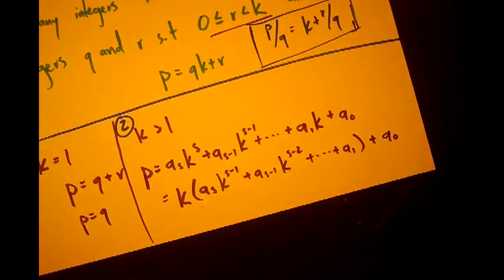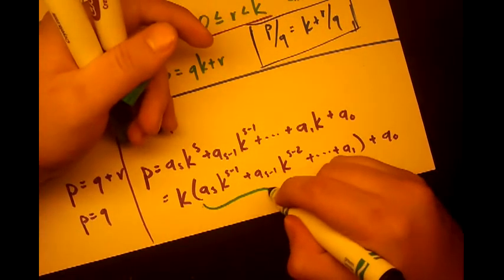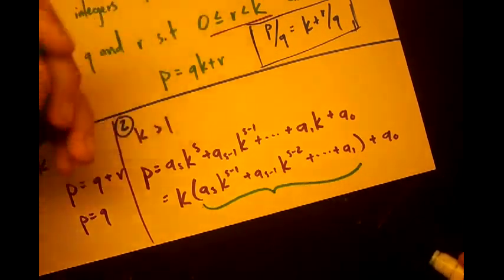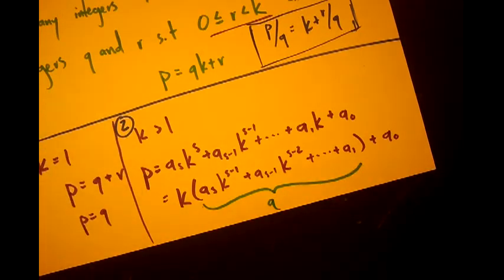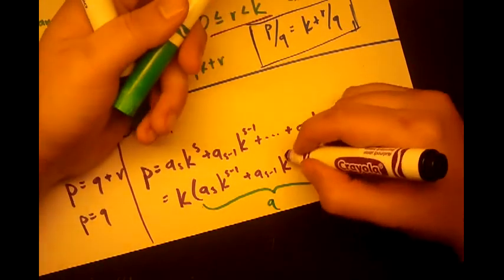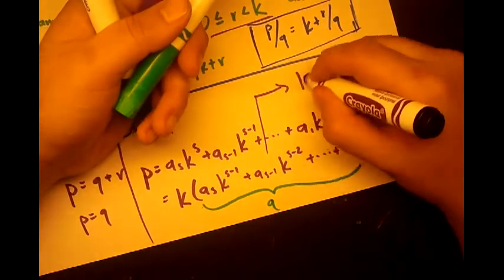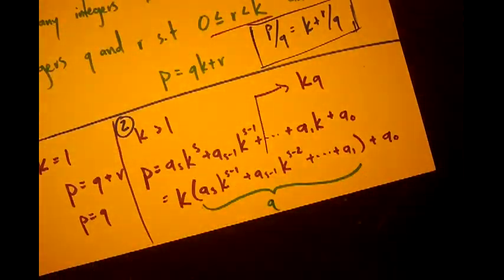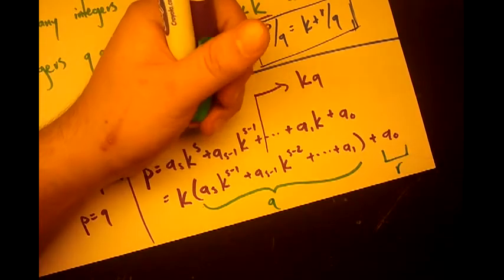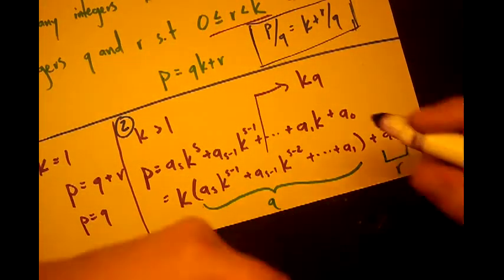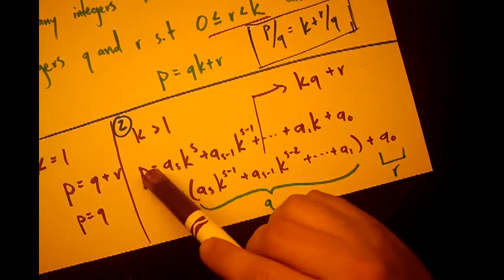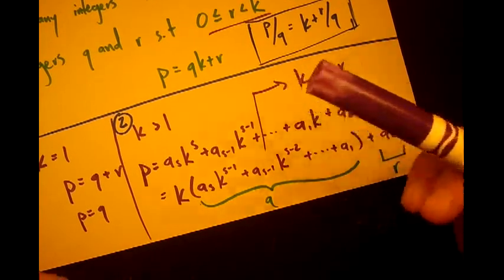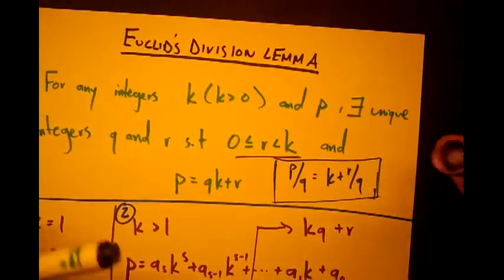So we're going to write it like this. And we're going to let this quantity right here be our q. So that the whole thing becomes, we'll go up here, k q. And we're going to let this quantity right here be our r. So it becomes k q plus r. So what we've successfully done is we've written p in the form k q plus r. We've shown that we can do it using the basis representation theorem.